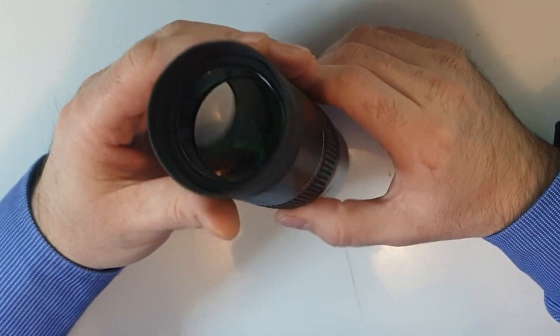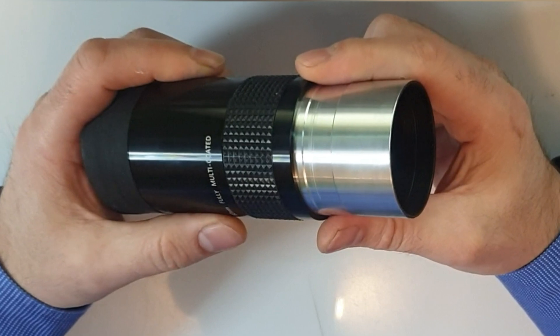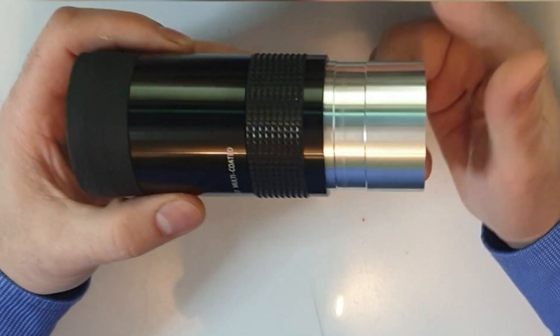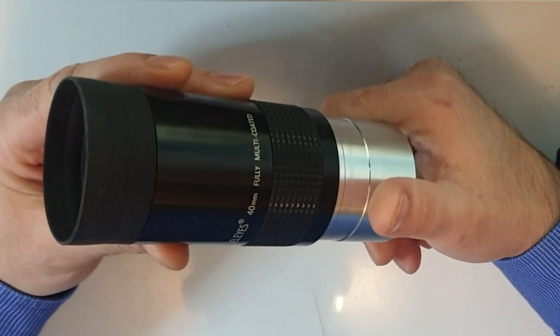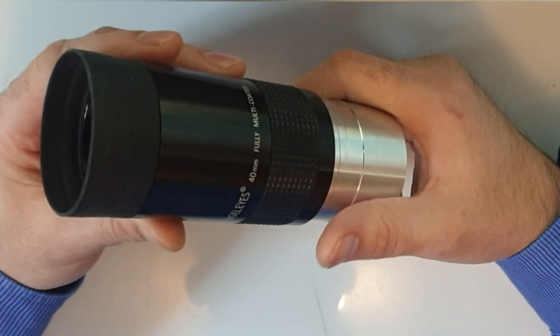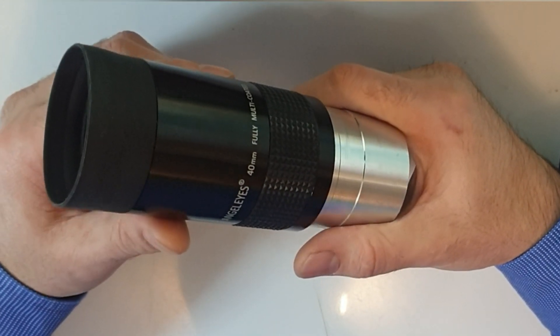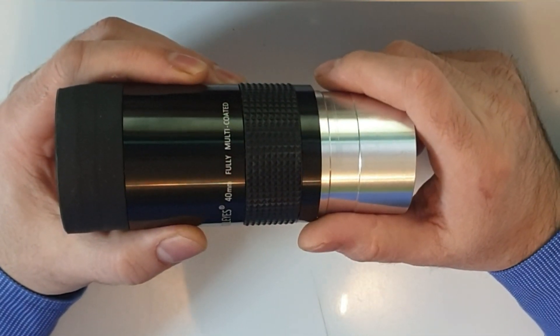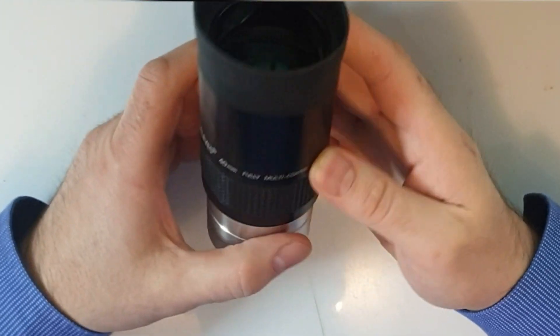Fully multi-coated lens, 72 degrees field of view, eye relief about 30 millimeters. But to be honest with you, I've been outside looking through this lens and I could look through it at 50 millimeters without any issues. Five lenses within its construction in a group of three, aluminum construction, nice and solid.